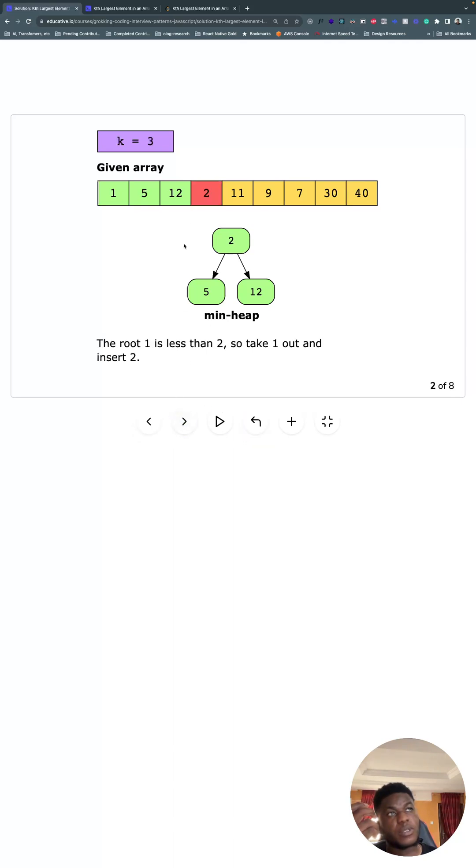So in this case, 2 is going to be in there. 1 is going to get kicked out. Now, here, 11 is bigger than 2. So 2 is going to get kicked out again. 11 is going to be there. The heap property is maintained. So for those three numbers, when 11 is here, 5 is the smallest. So it becomes the root of the heap. Then 9 is going to kick 5 out. 7 is not going to kick 9 out. 30 is going to kick 9 out. Now 11 is the smallest thing among these three. And 40 is definitely going to kick 11 out. Then we have 12. We've gone through the whole heap. So we can just return the root and we have our value.